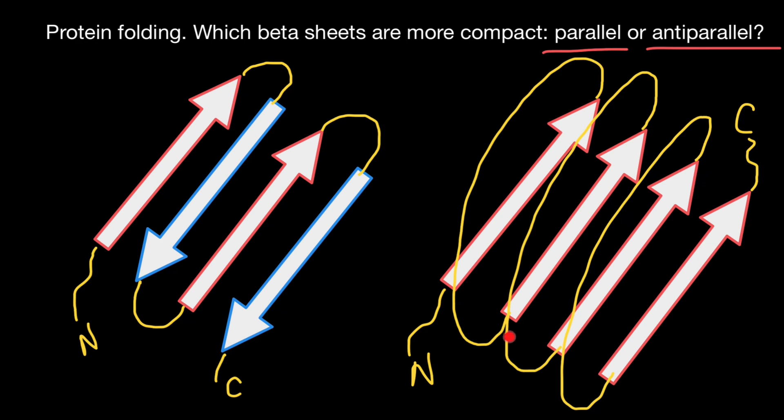Loops which can take as much space as beta sheets themselves. When beta sheets arrange in antiparallel order, they can be much more compact because the loops that connect them can be much smaller. Antiparallel beta sheets can be folded into a much smaller three-dimensional form.